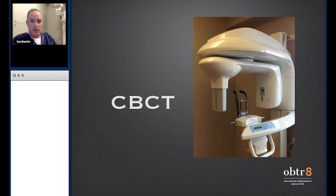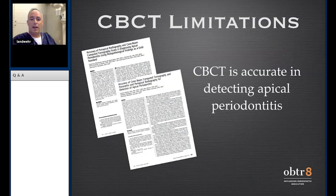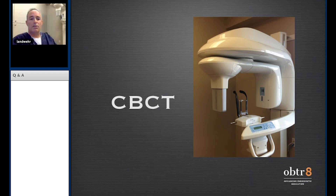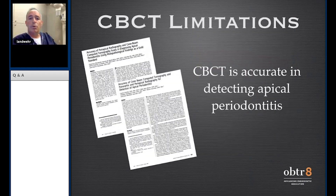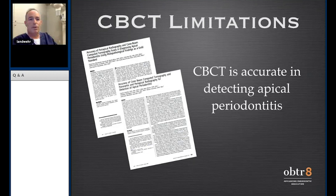I'm sitting in my cone beam room right now — you can see it right behind me on the screen. When we think about the limitations of cone beam, we know that it's an accurate way of detecting apical periodontitis. There could be 25, 30, or 50 articles on this. CBCT is going to be an enhanced way to determine if there is disease in the periapical region. It doesn't tell us what that disease is, but it's certainly a more precise measure.